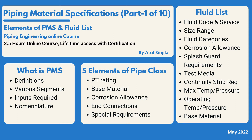First, we will look at the basic definitions of piping material specification and its various segments — what PMS consists of. Then we will see what the various inputs are to start developing this deliverable and where we get those inputs. The most important part is nomenclature: how we define various pipe classes in a particular PMS and what configurations we can have to recognize each pipe class.